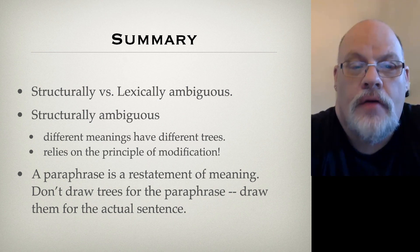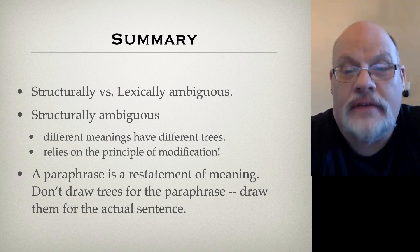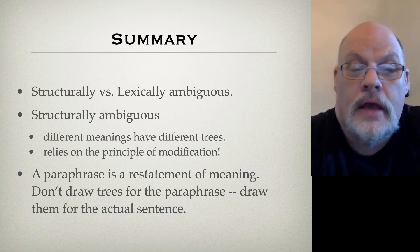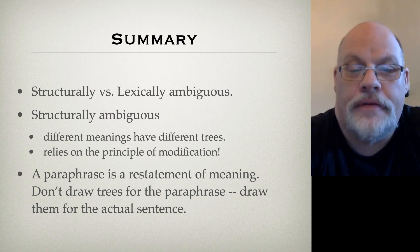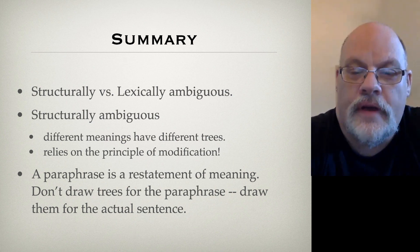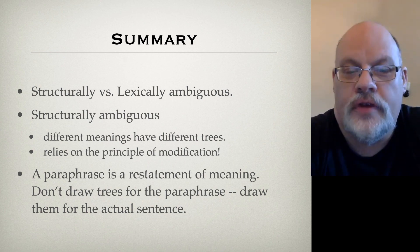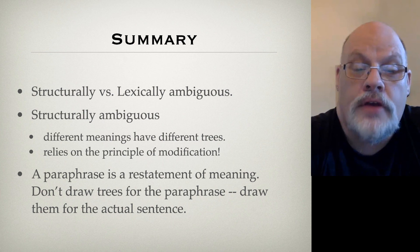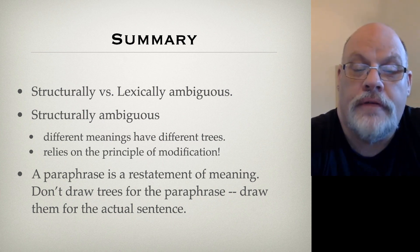To summarize: we have different kinds of ambiguity — structural versus lexical. When we have structurally ambiguous sentences, the different meanings have different trees, and we can rely on the principle of modification to explain this. Paraphrases are restatements of meaning that help us distinguish our trees. But you don't want to draw the tree for the paraphrase itself — you always draw the tree for the actual sentence.